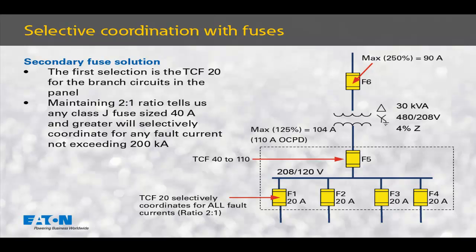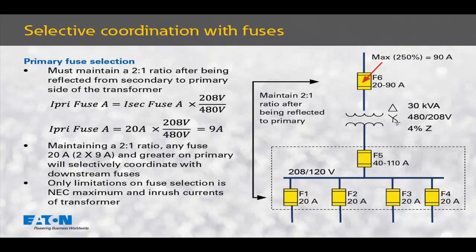The main in this panel is our first selection based upon selectivity goals. Because of the ratio tables, we know that this main fuse, fuse F5, can be anything from a 40 amp to a 110 amp fuse. Selecting the primary fuse, fuse F6, we'll have to address the different voltage levels between secondary and primary of this transformer. To ensure we maintain the 2-to-1 ratio, we must reflect the secondary TCF 20 amp fuse to the primary via the turns ratio. The 20 amp secondary fuse is calculated as a 9 amp primary fuse.